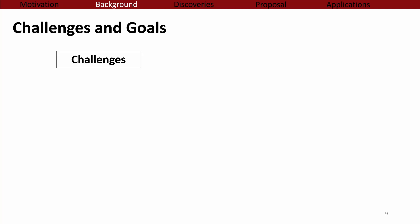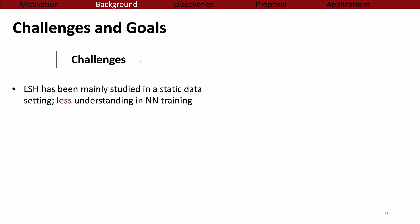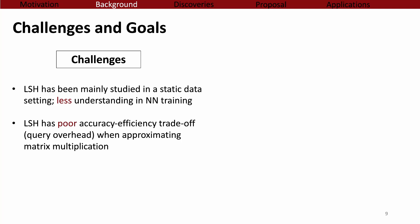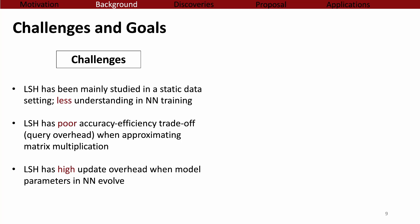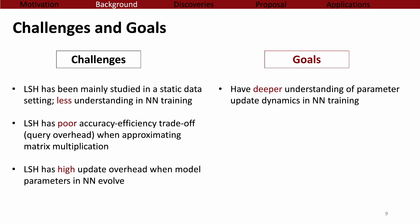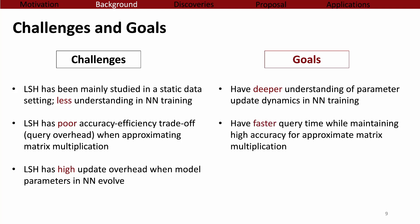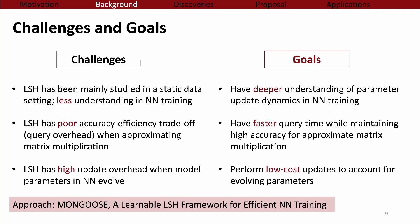The goal of this work is to address these challenges. While there is a lot of work on using LSH in nearest-neighbor search where data are fixed, there is less understanding in neural network training where model parameters are changing. The high query overhead of LSH results in poor accuracy-efficiency trade-offs, and the evolving parameters introduce high update costs. To overcome these challenges, our first goal is to better understand model parameter update dynamics, and then take advantage of that understanding to reduce update and query overhead. To this end, we introduce Mongoose, a learnable LSH framework which realizes these three goals.